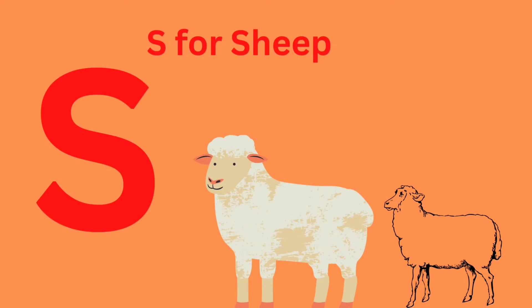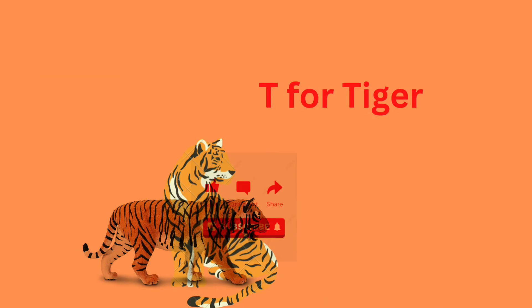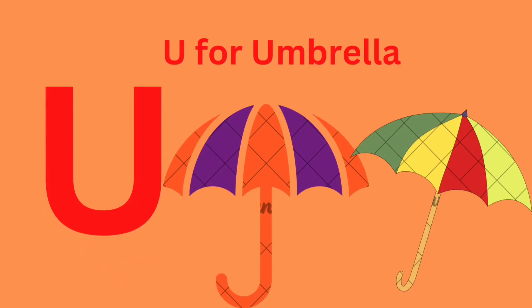S for sheep. T for tiger. U for umbrella.